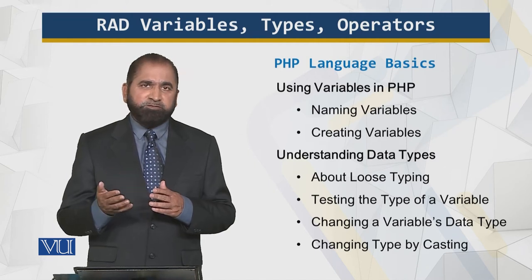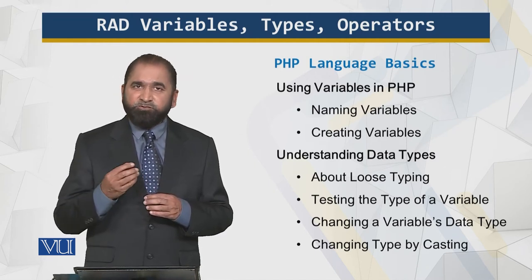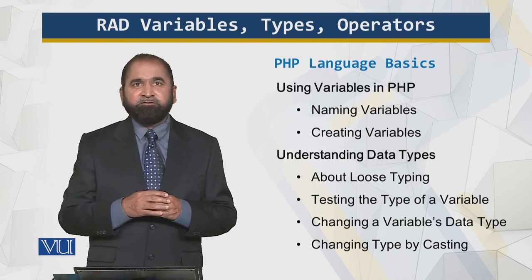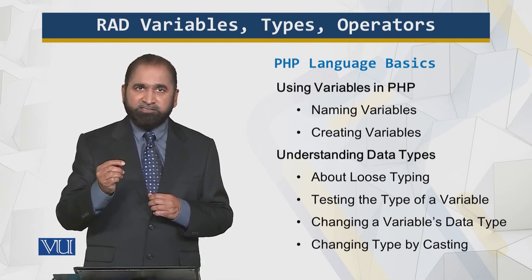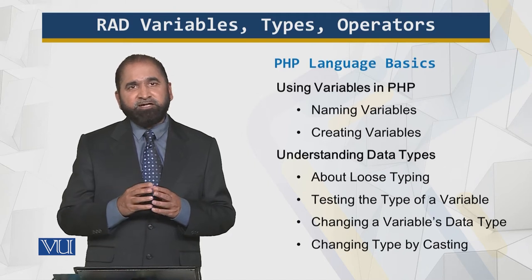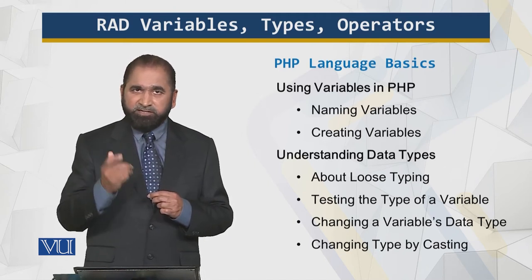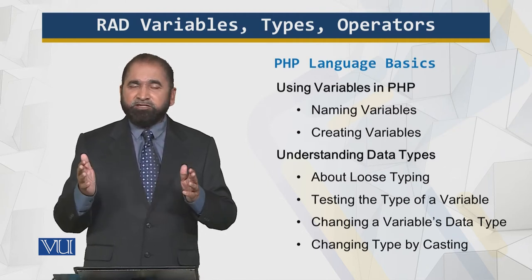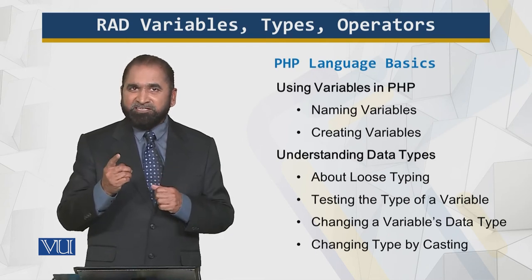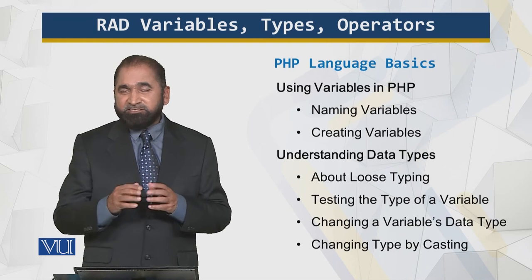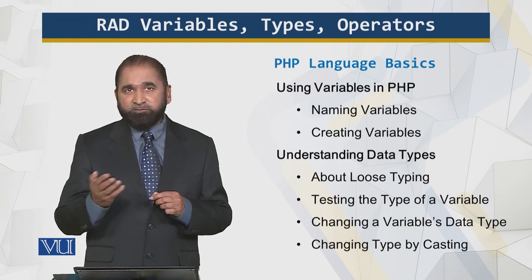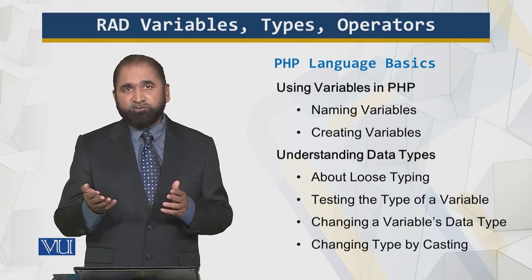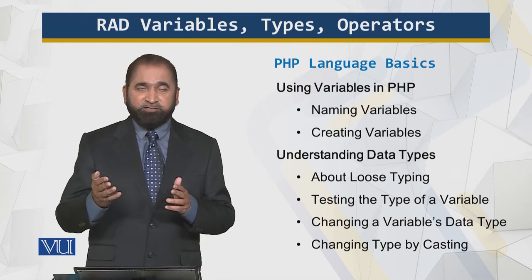There is a concept called loose typing in PHP. Loose type means that the type of data associated with a variable is not fixed, unlike Java where an integer variable remains an integer. In PHP, you can declare an integer variable, assign an integer value, then add a real value and it becomes a real variable, then concatenate a string and it becomes a string variable. You can test the type with gettype, change it with settype, or use typecasting. So there's a lot of flexibility.